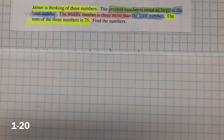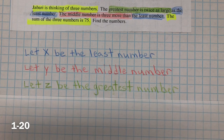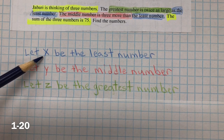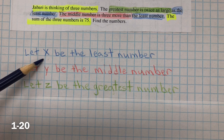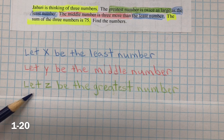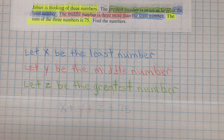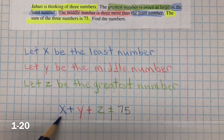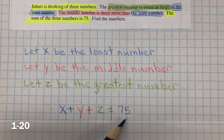Since we don't know the three numbers he's thinking of, we're going to come up with variables to represent the unknown. We're going to let X be the least number, let Y be the middle number, and let Z be the greatest number. We know that the sum of these three numbers — X plus Y plus Z — will equal 75.